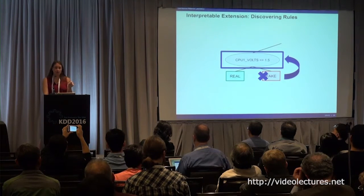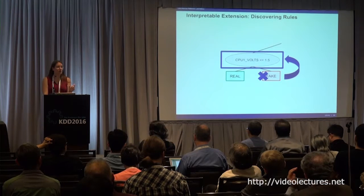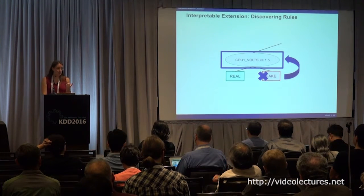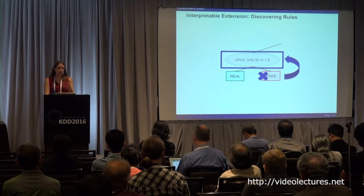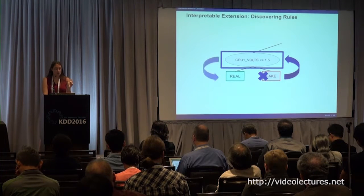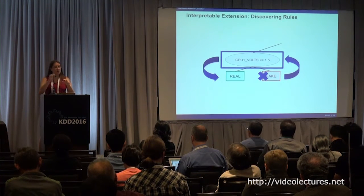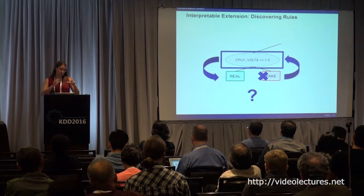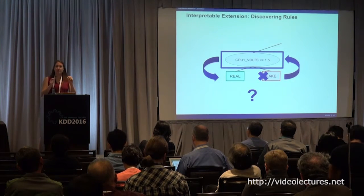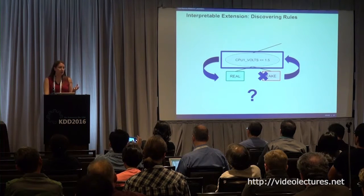We look at that particular node in the decision tree and hop back up one from the leaf. The question we try to answer is: how would that data point have had to be different in order for us to think it's normal? We start walking back up the tree, look at the thresholds on each node, and ask: if our data point had been slightly different and gone down the other path from that node, would it have been classified as real? If it would have been, then that rule at the node is what we present to the analyst — is this rule actually interesting to you or not?